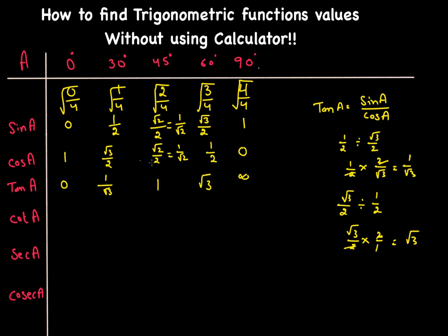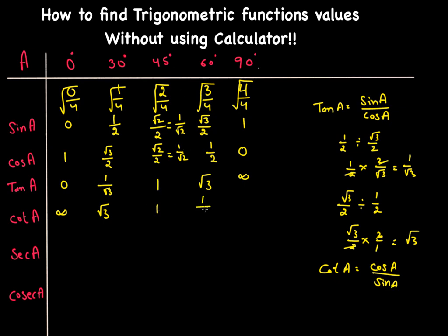For cotangent, the easiest approach is to flip the tangent values in the opposite direction — cotangent equals cosine over sine. So infinity goes to 0°, √3 goes to 30°, 1 stays at 45° (tangent and cotangent share the same value there), 1/√3 goes to 60°, and 0 goes to 90°.